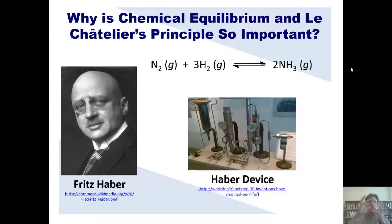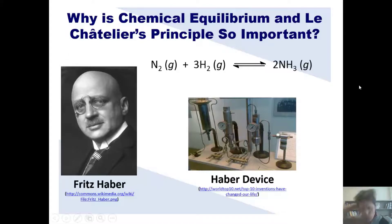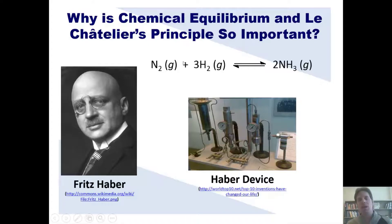That NH3 would shift to the cold chamber, condense into a liquid, and be drained off again. By repeating this process continuously, the reaction could be driven to convert the reactants almost 100% efficiently into NH3 — a useful fixed form of nitrogen.